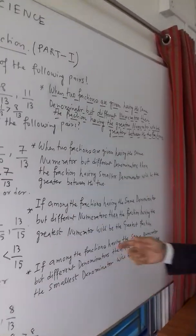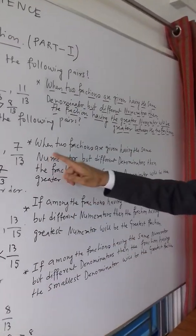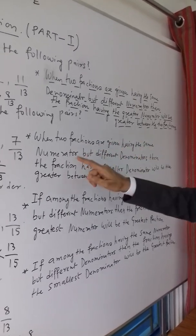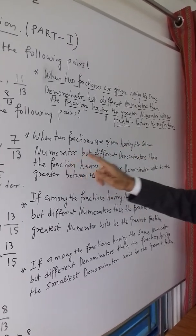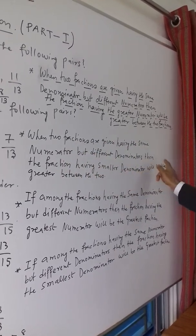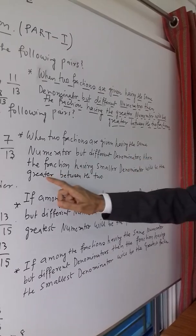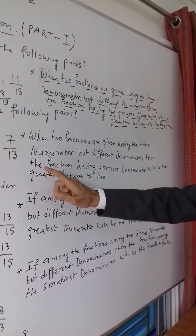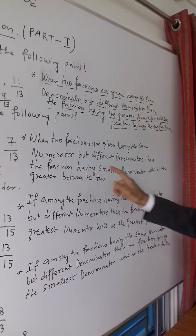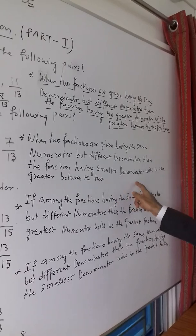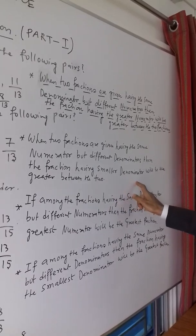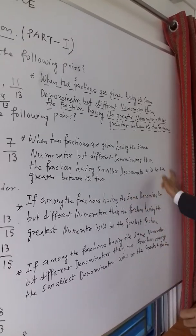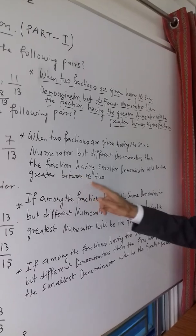Let me repeat this once again. When two fractions are given having the same numerator but different denominators, then the fraction having the smaller denominator will be greater between the two.